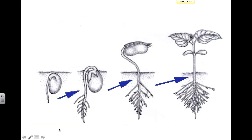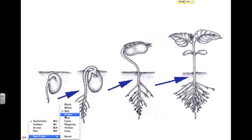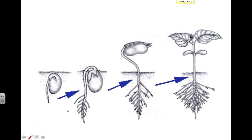If you compare that to a taproot, a taproot is going to have one main root that kind of runs down the middle, as I'm outlining here with the pen, and that's going to have smaller roots that come off of it. A carrot is a great example of a taproot. Dandelions, which this is basically a picture of, is also a great example of a taproot.